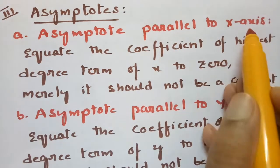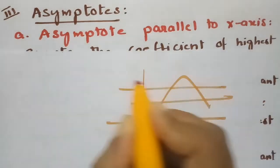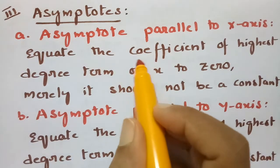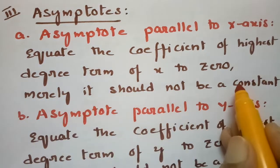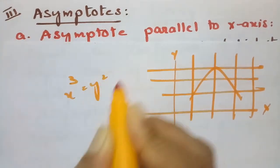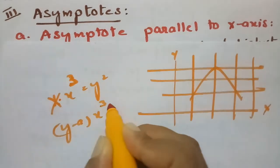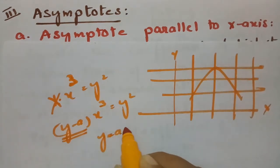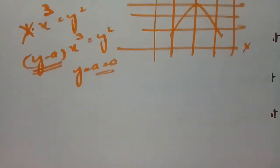The third step is asymptotes. Asymptotes are lines that the curve approaches. To find asymptotes parallel to the x-axis, equate the coefficient of the highest degree term of x to 0 — but only if it is not a constant. To find asymptotes parallel to the y-axis, equate the coefficient of the highest degree term of y to 0, for example y − a = 0 or x − a = 0.